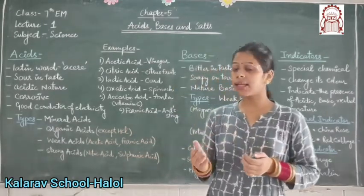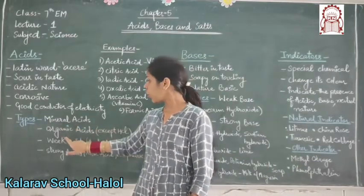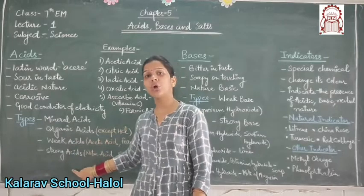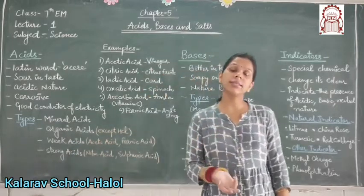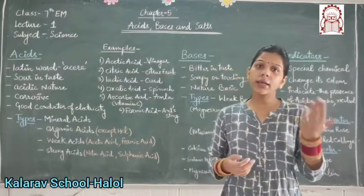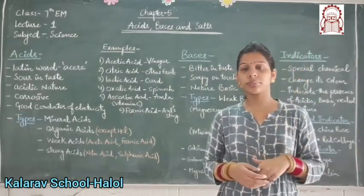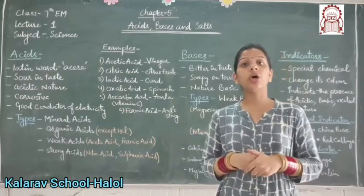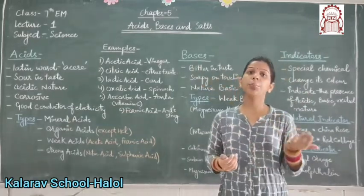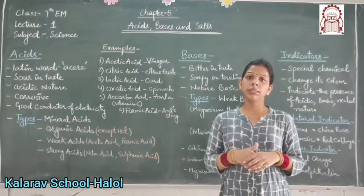Acids are categorized into 4 categories: mineral acids, organic acids, weak acids, and strong acids. Mineral acids are the acids which are taken or produced from the minerals of the earth's crust. Organic acids are the acids which are prepared or taken from plants and animals.